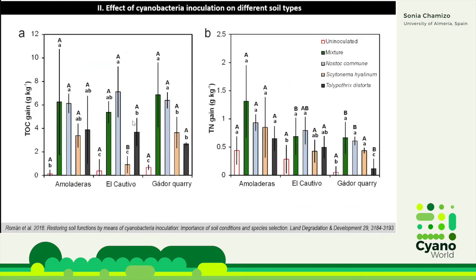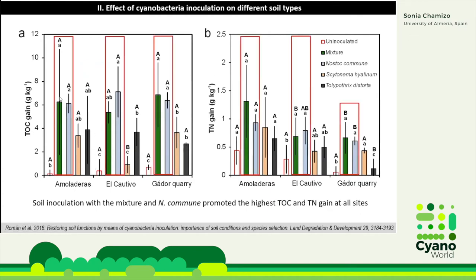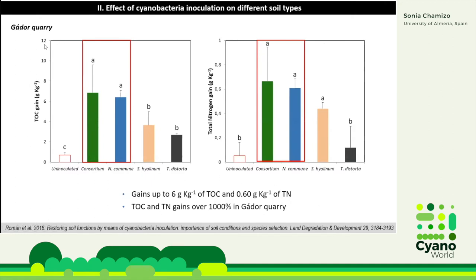Here you can see the gain in organic carbon and in nitrogen content in the different treatments for the different sites. We found that soil inoculation with the mixture and Nostoc commune led to a higher increase in organic carbon and nitrogen content in the soils. As an example, I want to show the results of the Gador quarry, which is the most degraded soil. It is here where we observed a higher increase in carbon content and nitrogen content due to cyanobacteria inoculation.